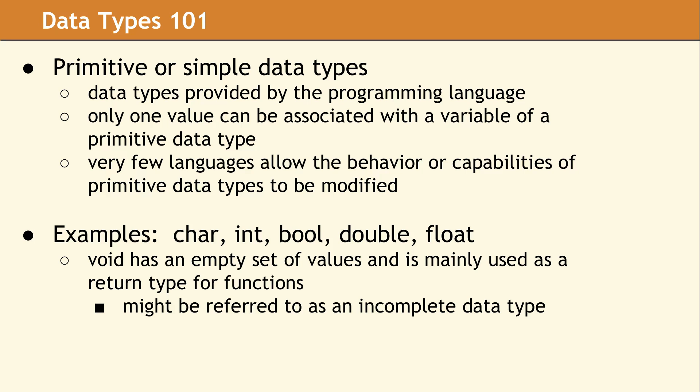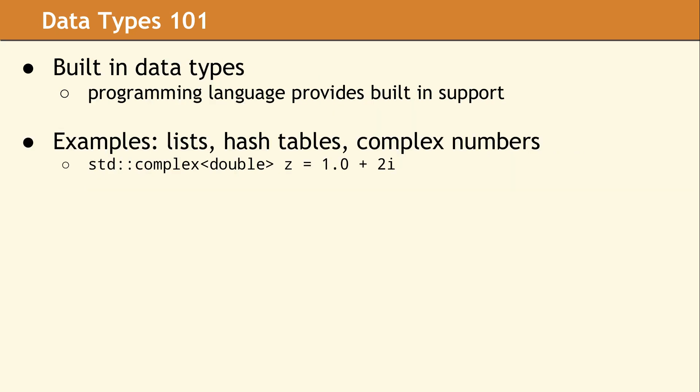Another category are built-in data types. These are also provided by a computer language. Things like a hash table or complex numbers. These data types can be built into the programming language, or sometimes they're provided by a standard library, as in C++.